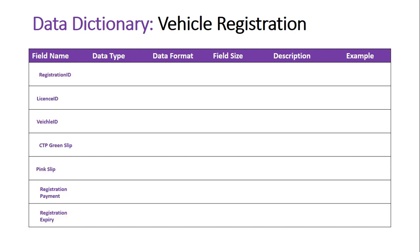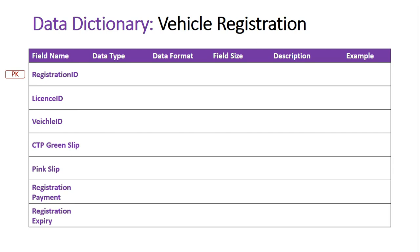The fields in this database are: Registration ID — a unique ID for each car registered by a driver — License ID, Vehicle ID, CTP Green Slip, Pink Slip, Registration Payment, and Registration Expiry. There are three forms of ID, but we can only have one primary key. The Registration ID is the primary key — the single unique field that identifies all individual records stored in this database.